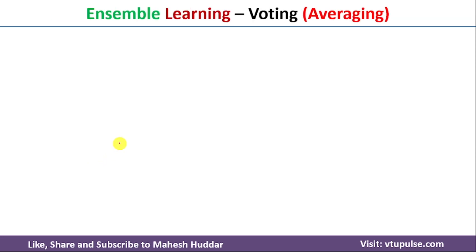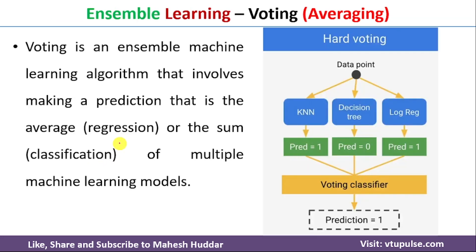The first method is voting or averaging. In voting or averaging, we first consider multiple models and each of those models will be trained on a given dataset. Once those models are trained, whenever we get a new example, that new example is given as input to all the models. Each model will predict the output, and later we combine those predictions to come up with the final prediction.